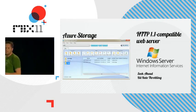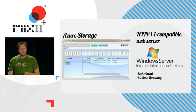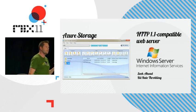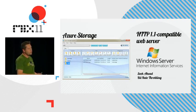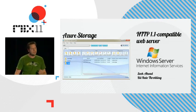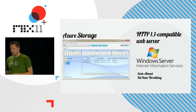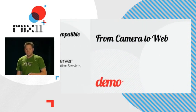Another thing to think about is HTTP 1.1 compatible web servers. This is important because it enables you to do things like seeking ahead in your video. If a user wants to jump to the end of an hour-long clip without downloading everything before it, you need a web server that supports byte range requests. If you're using IIS, you can add Media Services and do things like bitrate throttling as well, to save on bandwidth.